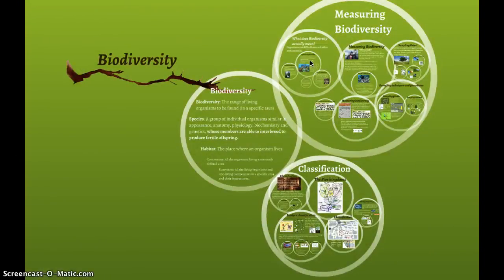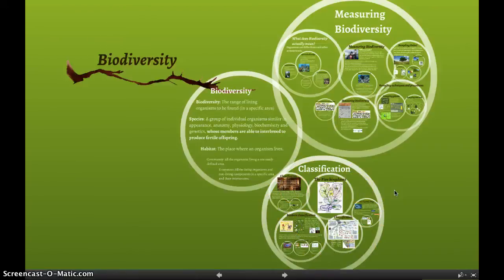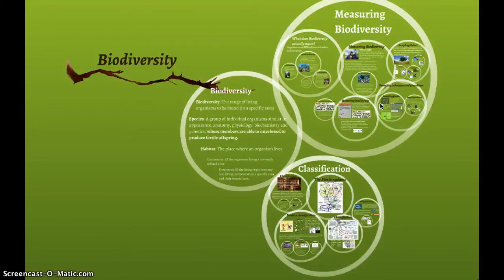We're going to continue our discussion of biodiversity. In the last video we talked about measuring biodiversity, and in this one we're going to move on to classification. Once you have an idea of biodiversity, what do you do with that information? When you start classifying and grouping organisms, that gives you information about their relationships and ultimately about how they might have evolved.